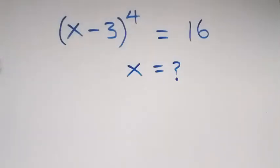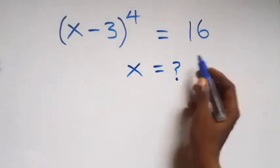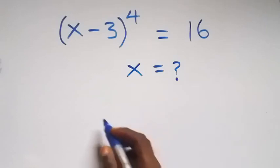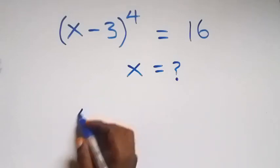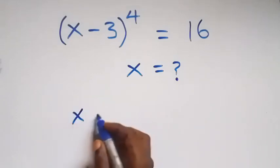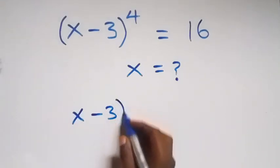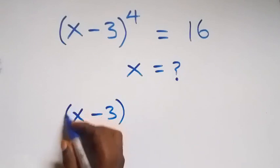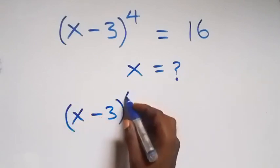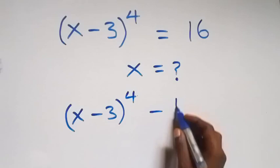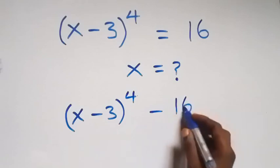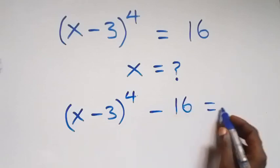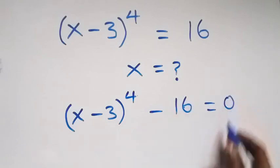Hello and welcome to how to solve this nice algebra problem. From here, let's take 16 to this side, and this becomes x minus 3 raised to power 4, minus 16 equals to 0 on this side.